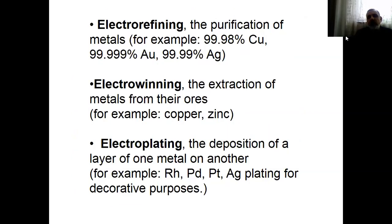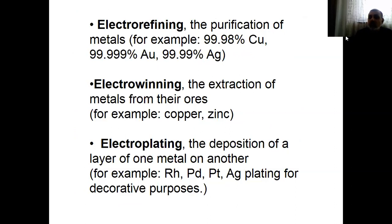When we say Electrometallurgy, we should talk about Electro-Refining. What is Electro-Refining? The purification of metals — for example 99.99% copper, which we call 4-9. It could also be possible to produce 5-9 copper. Especially some brands produce 5-9 gold — 99.999% gold can be produced by these methods. Also it's possible to produce 5-9 silver.